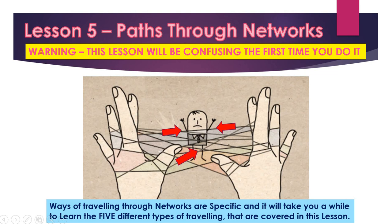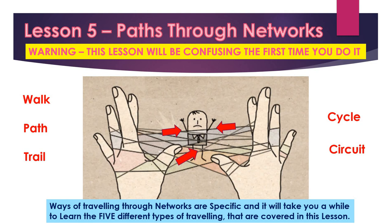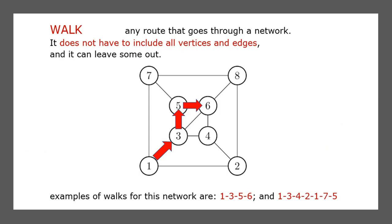This lesson will be super confusing the first time you do it, because there's five different things and they're all kind of the same, but they're very specific. Although two things might look the same, they're not. So we've got walk, path, trail, cycle, and circuit — these are the five things you have to learn in this lesson. A walk is the most informal thing.